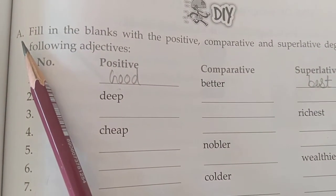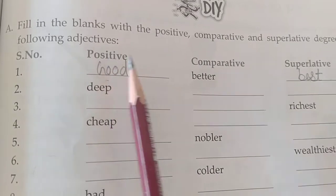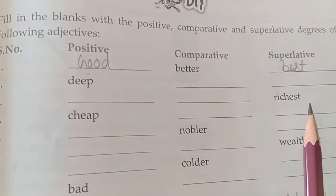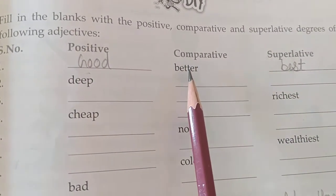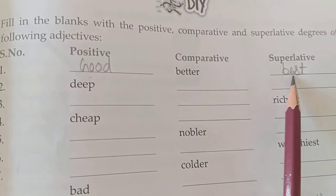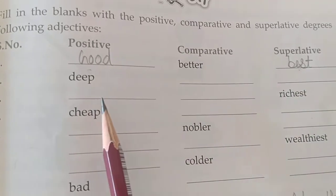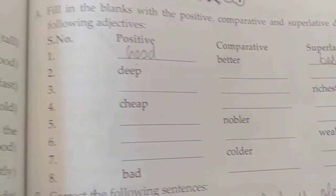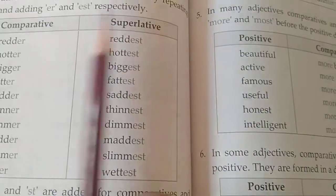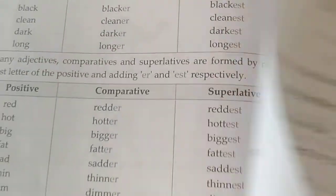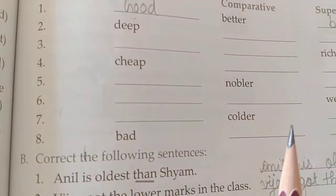In Part A, you have been given columns for positive, comparative, and superlative degrees. If comparative degree 'better' is given, then positive degree is 'good' and superlative degree is 'best.' Similarly, you have to write the degrees for 'cheap.' Try to fill in the table yourself.